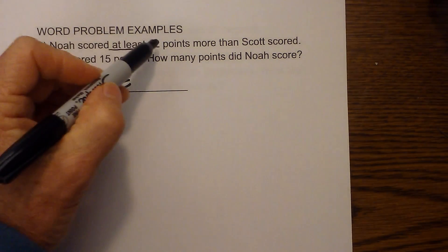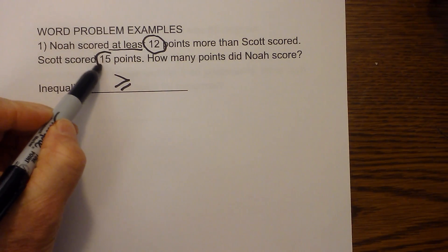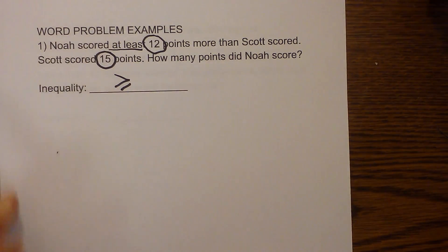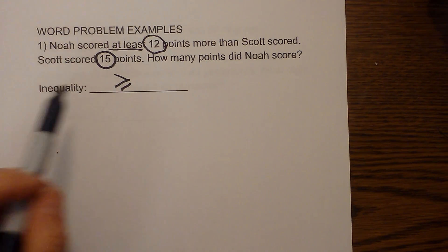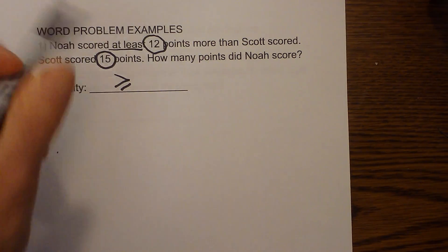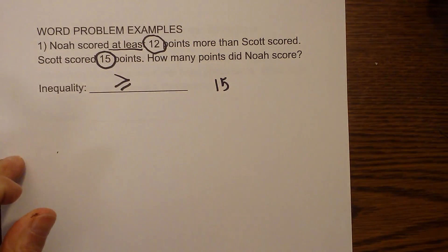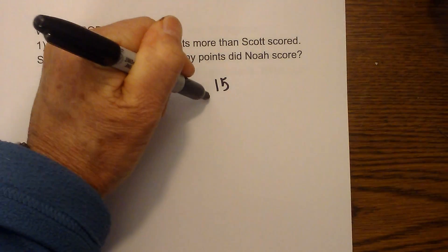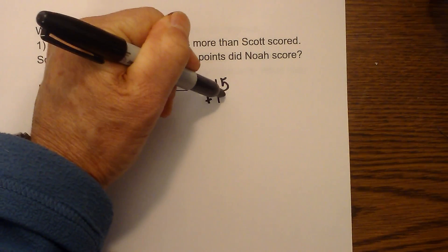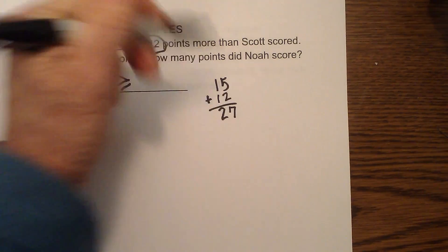Next I'm going to circle the numbers — we have 12 and 15. Now I need to solve the problem. It says Noah scored 12 more than Scott. Scott scored 15, so Noah scored 12 more, which means he scored 27.